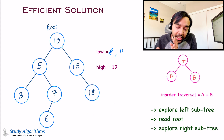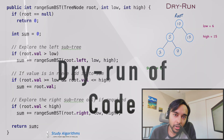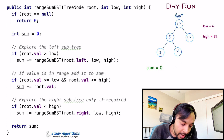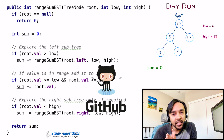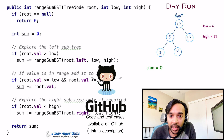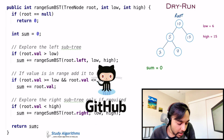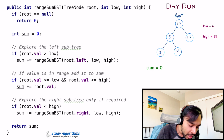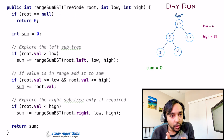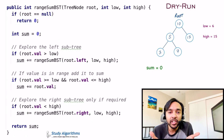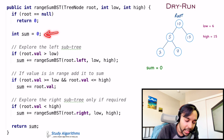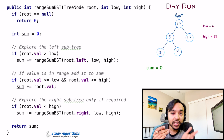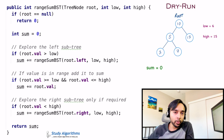Let us quickly do a dry run of the code to see how it actually works in action. On the left side of your screen you have the actual code to implement this solution, and on the right I have a sample test case. This root is passed in as an input parameter to the function along with the limits low and high. This complete code and its test cases are available in my GitHub profile as well — you can find the link in the description below. Moving ahead with our dry run: first of all, we have a terminating condition — if root equals null, just return 0. That means you didn't find any tree, so simply return 0. Next, we initialize the value of sum to 0.